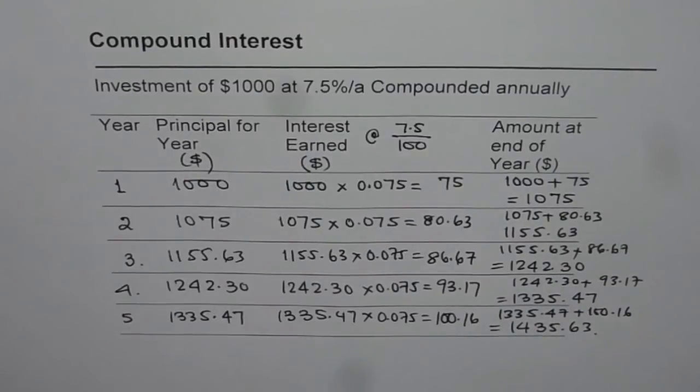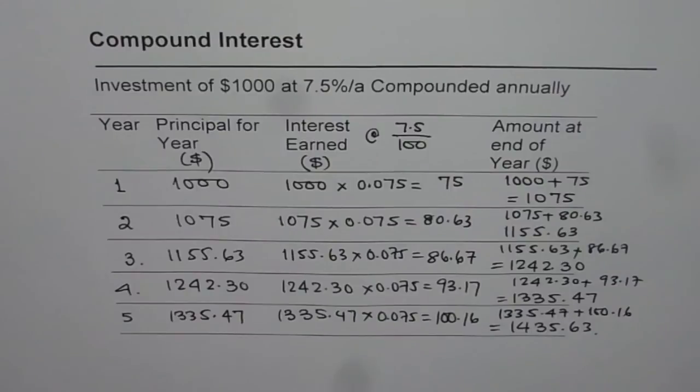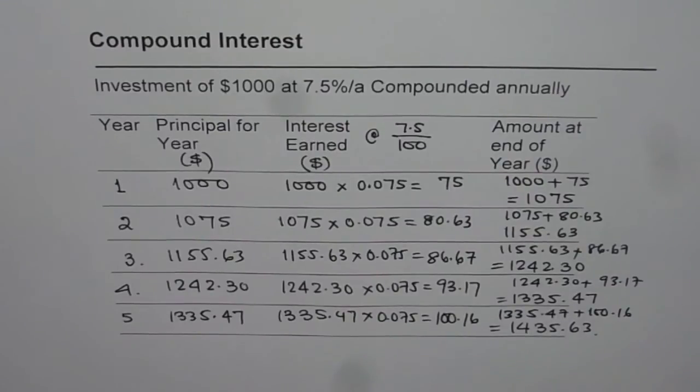It is almost $100 more than what we earn with simple interest. Compounding really helps money to grow much faster. In five years, we saw with the same conditions, when we apply compound interest that too compounded annually, there is a growth of $100 more in five years.